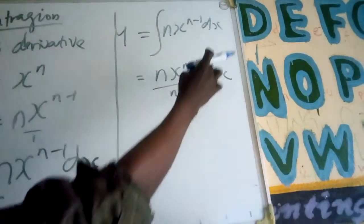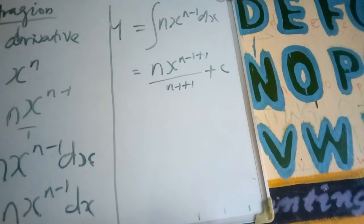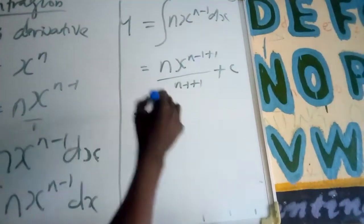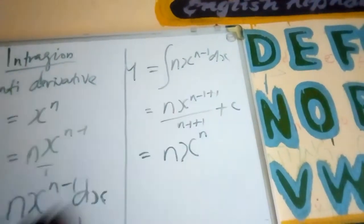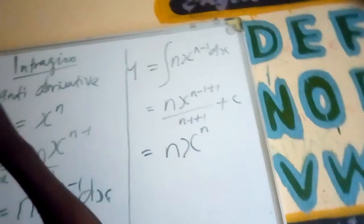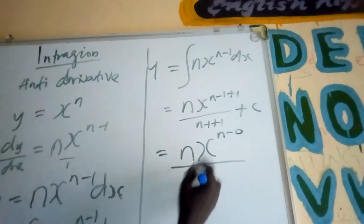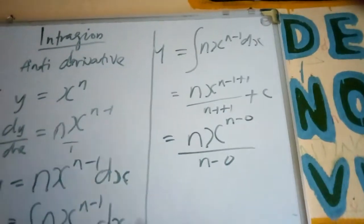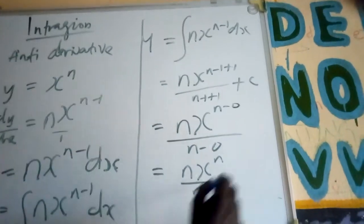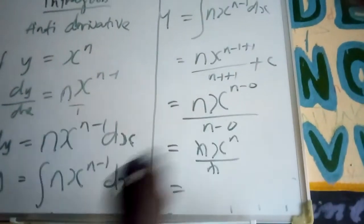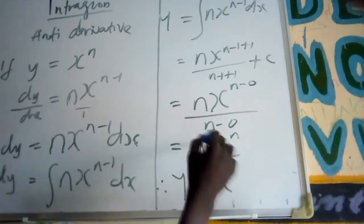Raising to the power, then plus constant. This simplifies as: we have n x power n minus 1 plus 1; n minus 1 plus 1 is 0; n minus 0 all over n minus 0. This is the same as n x power n all over n, which equals n cancel n. Therefore, our y is equals to x power n.